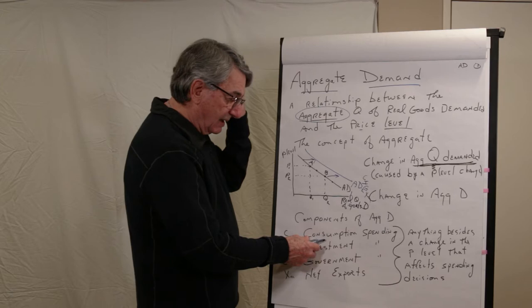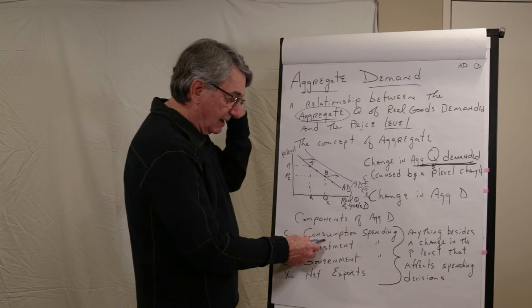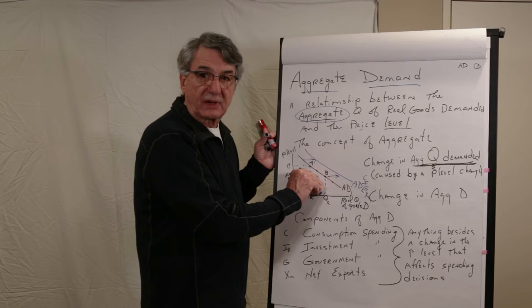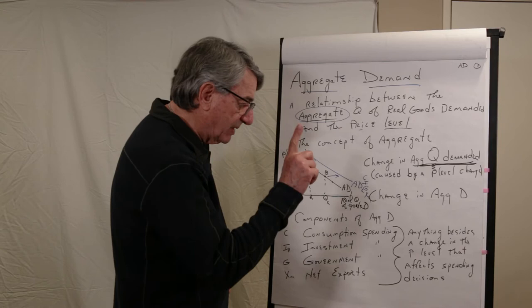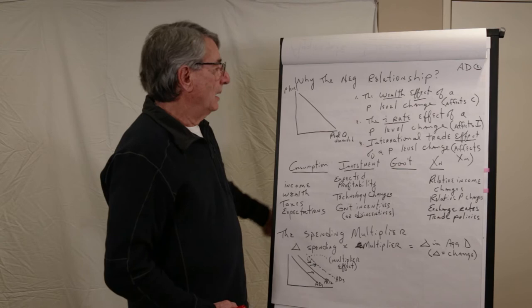So anything that changes one of the components of aggregate demand would cause a shift, either an increase, that's a shift right, or a decrease, a shift left. So in the case of consumption spending, well, I'll go through it in just a second. But anything besides a change in the price level, because that's included in this graph, would cause a shift, that's a change in aggregate demand.